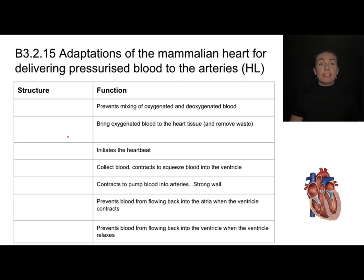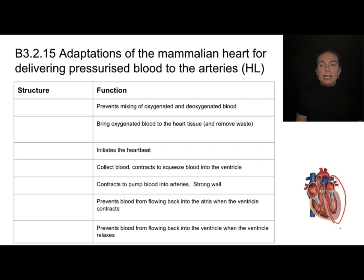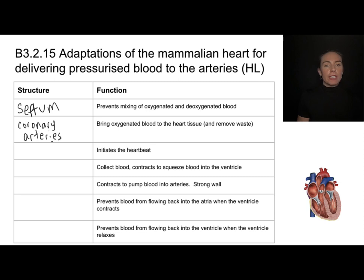Now for the functions. The structure that prevents mixing of oxygenated and deoxygenated blood is the septum — deoxygenated blood is on the right side, oxygenated blood comes from the lungs and is pumped out by the left side. For bringing oxygenated blood to the heart tissue itself, branching off the aorta are the coronary arteries. The coronary arteries carry oxygen-rich blood to the heart tissue itself — the heart is a muscle, it needs oxygen and nutrients too.